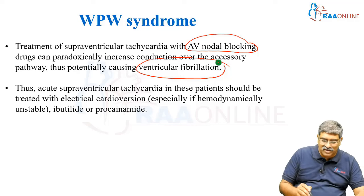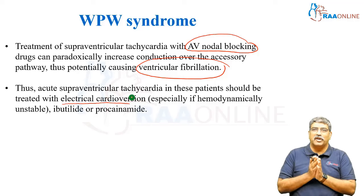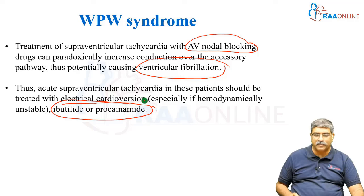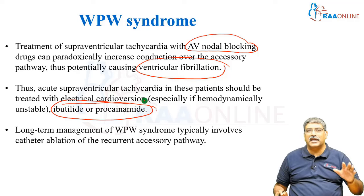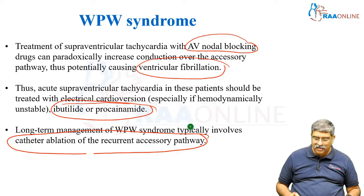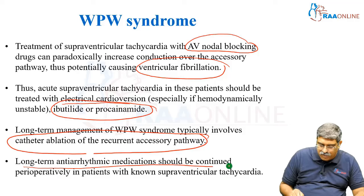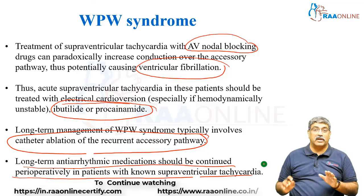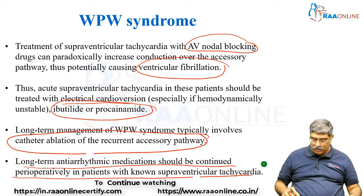The treatment is electrical cardioversion, particularly if the patient is hemodynamically unstable, or you can use ibutilide or procainamide. Long-term management of WPW syndrome typically involves catheter ablation of the accessory pathway. Long-term anti-arrhythmic medication should be continued perioperatively in patients with supraventricular arrhythmias, as continuation of anti-arrhythmic agents is very important in the perioperative period.